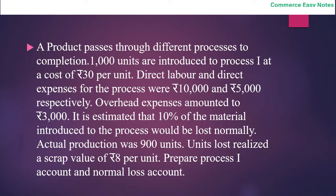Now we'll see a question related to normal loss accounting. A product passes through different processes to completion. 1,000 units are introduced to process 1 at a cost of Rs. 30 per unit. Direct labour and added expenses were Rs. 10,000 and Rs. 5,000 respectively. Overhead expenses amounted to Rs. 3,000. It is estimated that 10% of the material introduced would be lost normally. Actual production was 900 units. Units lost realized a scrap of Rs. 8 per unit. Prepare process 1 account and normal loss account.